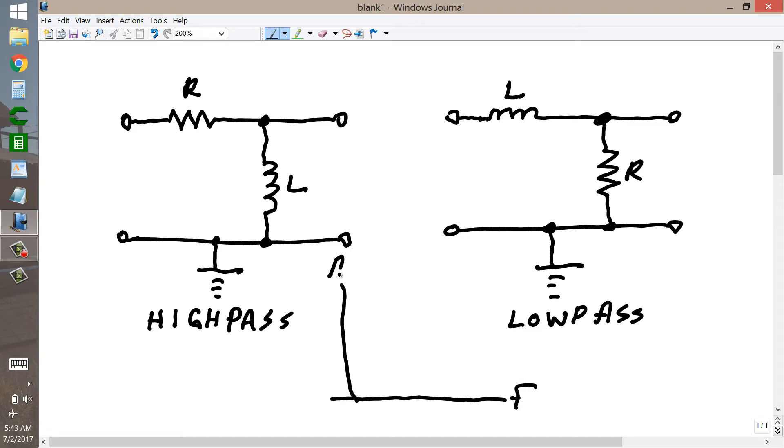and the amplitude, and we'll call it A, on a vertical axis, then a high-pass response looks like this and a low-pass response looks like this.